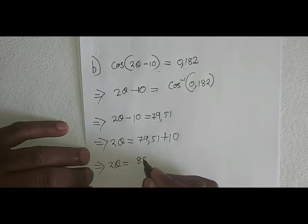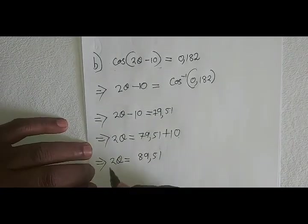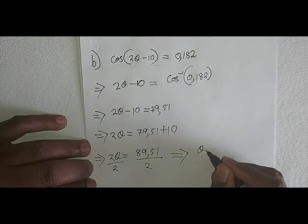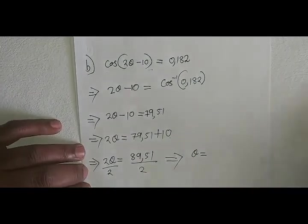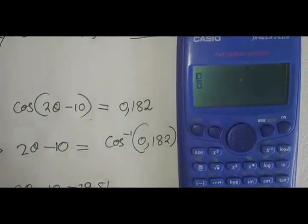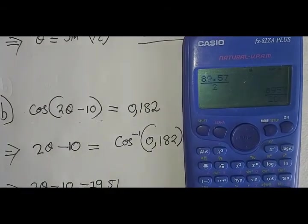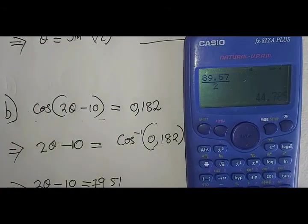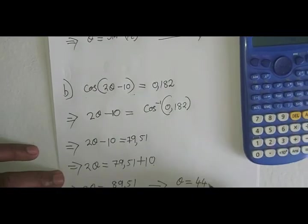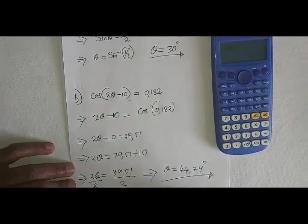From there we divide both sides by 2, which means θ equals - let me use my calculator - 89.51 over 2 equals, as a decimal to 2 decimal places, 44.79 degrees. Thank you so much, God bless you.